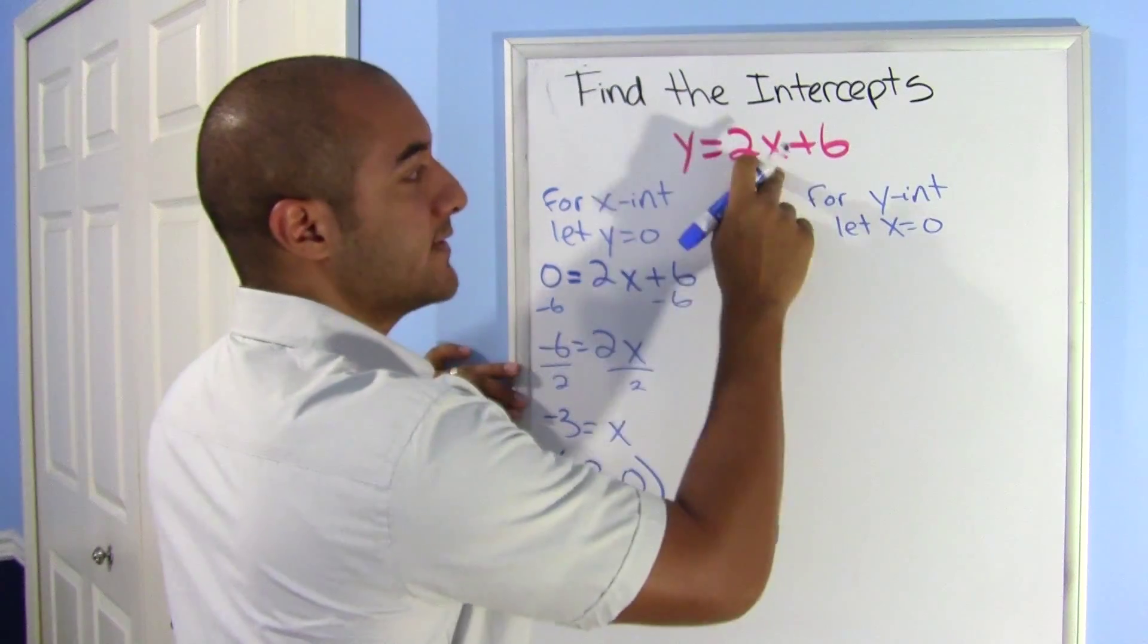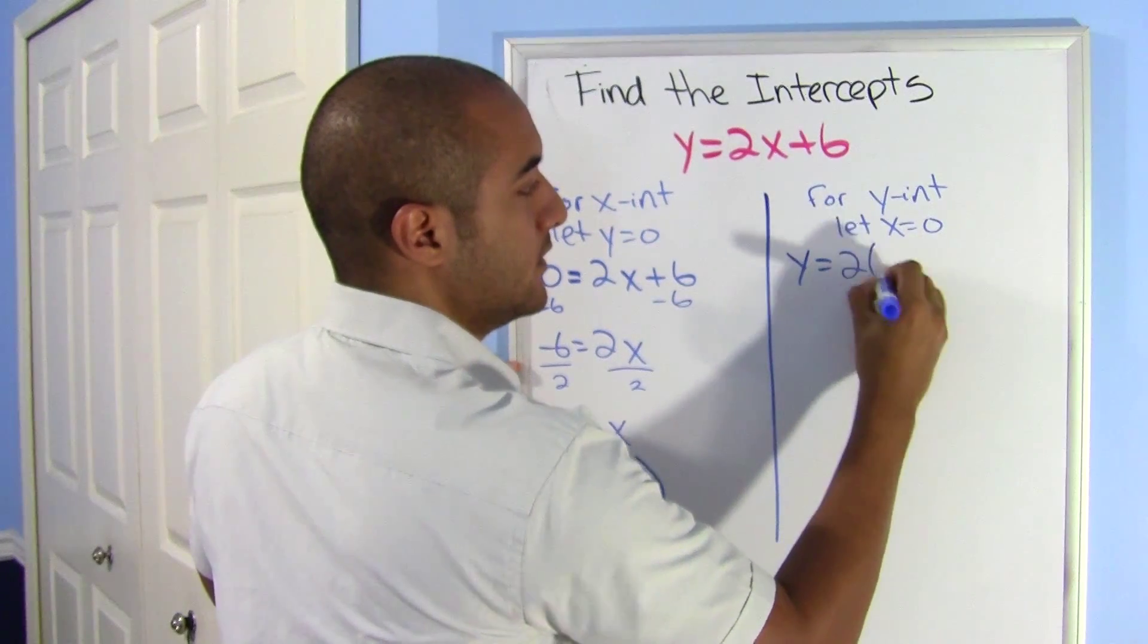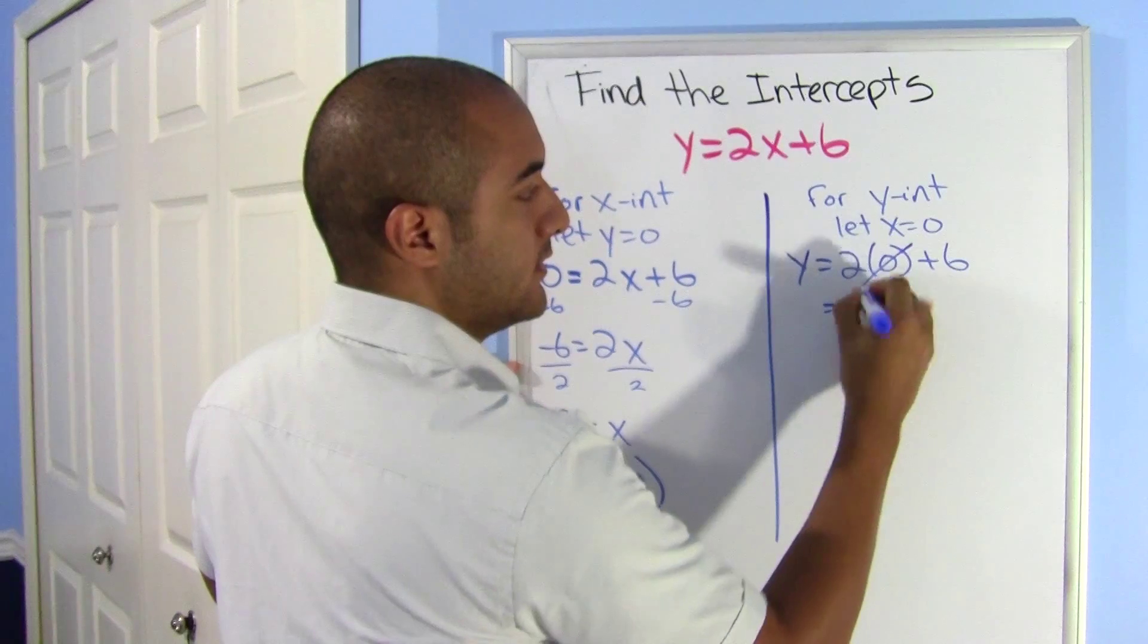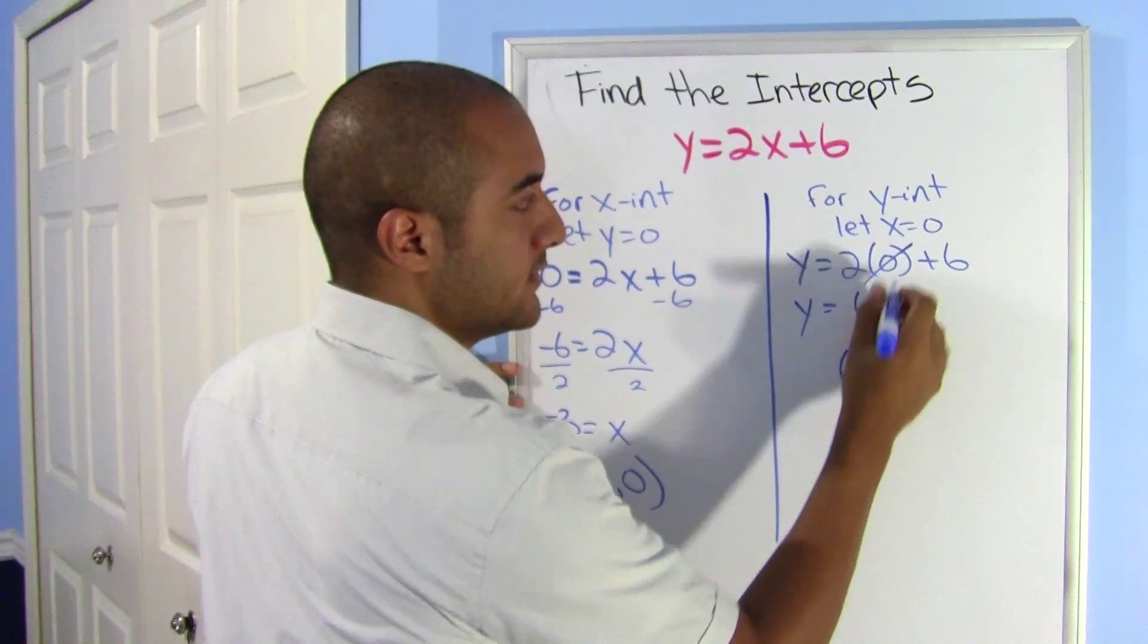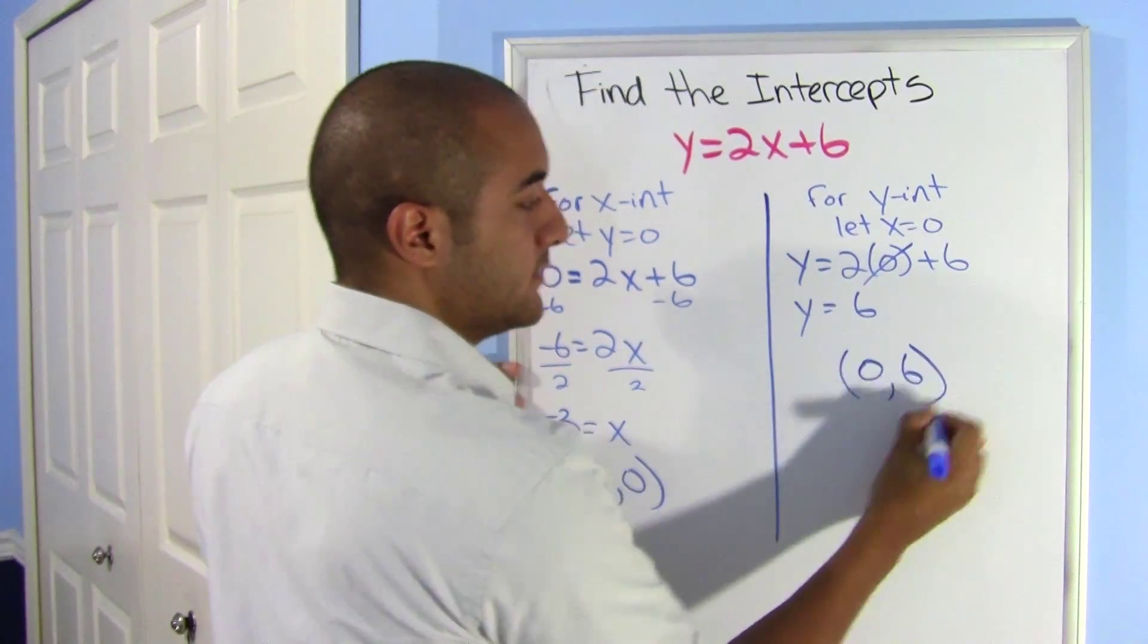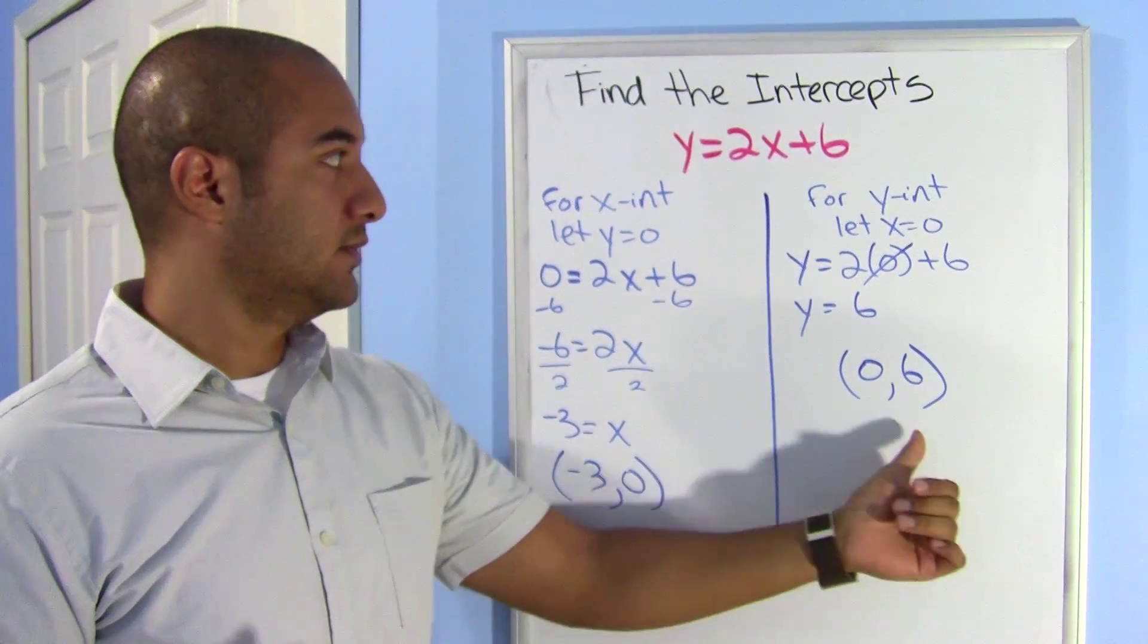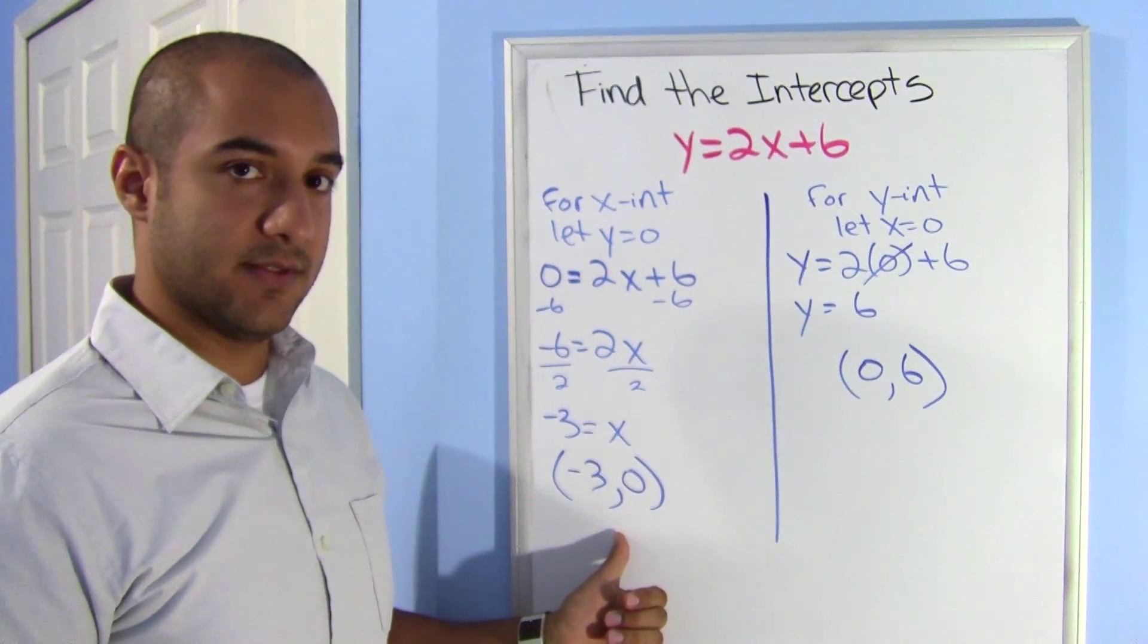This time I make my x equal 0, so y equals 2 times 0 plus 6, that's gone, let's just have y equals 6. And here my coordinate is, remember this time let your x be 0 and your y is 6. And there you have it. You have your y-intercept and your x-intercept.